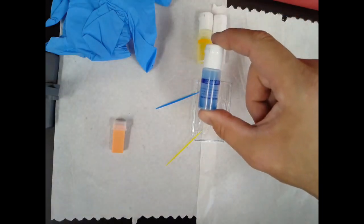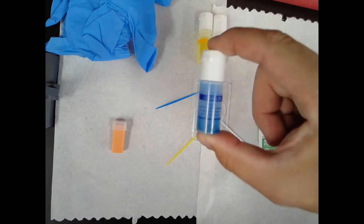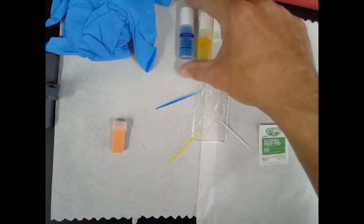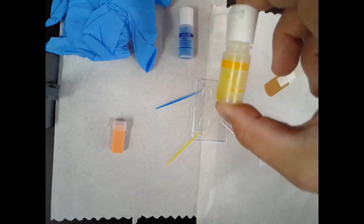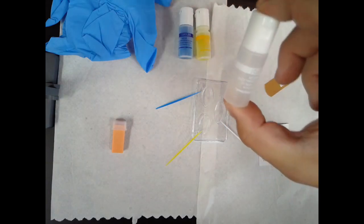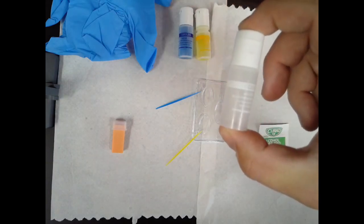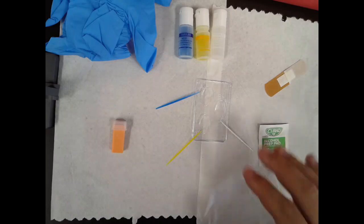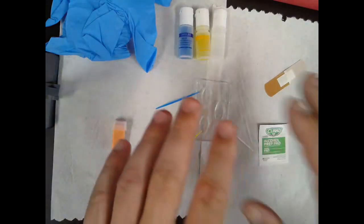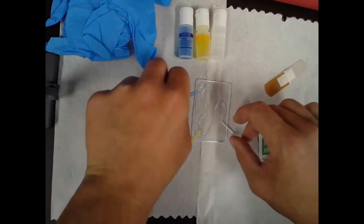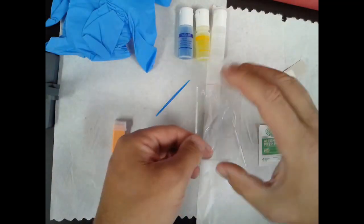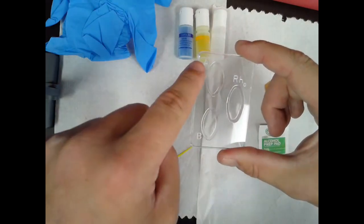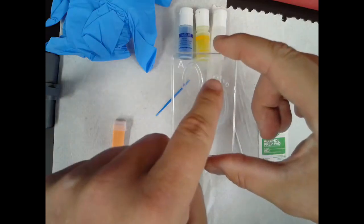When you see these antibodies in serum that are blue in color, that's usually universally A antibodies. In yellow, these would be B antibodies, and then the clear colored one here, these would be antibodies for the D antigen or the RH factor. If you look closely at this tray here, you'll see there are three basins in here, and then you'll see there's an A, a B, and an RH.